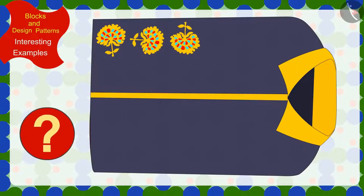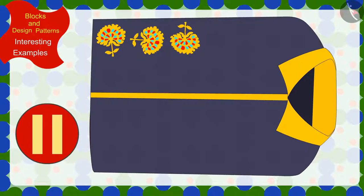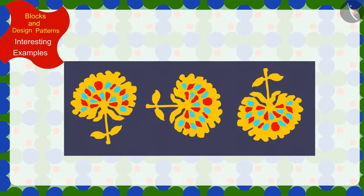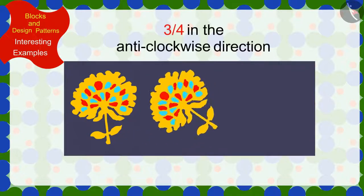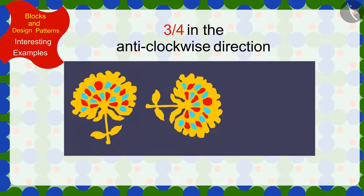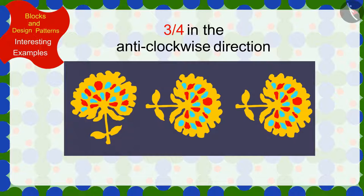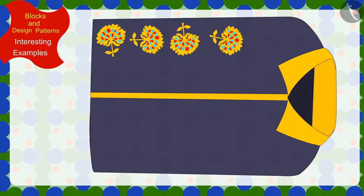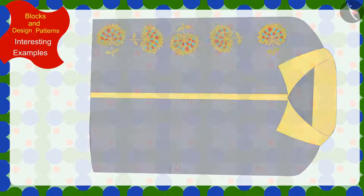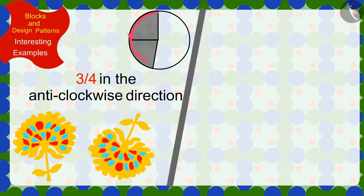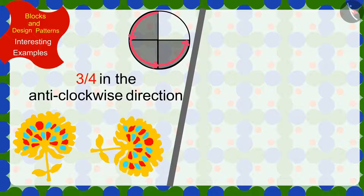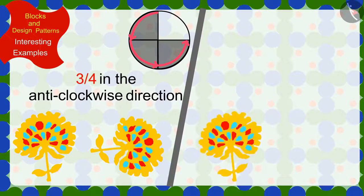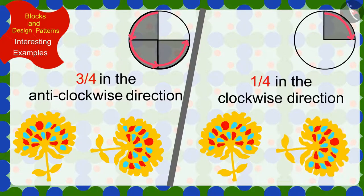Children, can you help Uncle recognize the rule of this pattern made by Kittu? If you wish to, you can find the solution by stopping the video. If we look closely, we will find that this impression is made by rotating its previous impression three quarters in the anti-clockwise direction. In the same way, the impression made after it is also rotated three quarters in the anti-clockwise direction. To make this pattern, Kittu has rotated the previous impression three quarters in the anti-clockwise direction, or one quarter in the clockwise direction, every time.